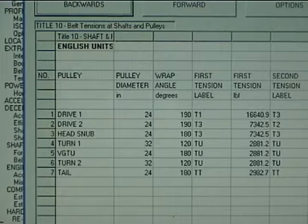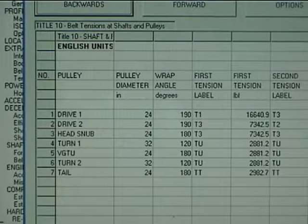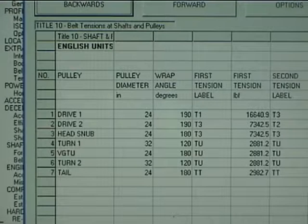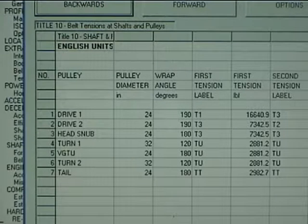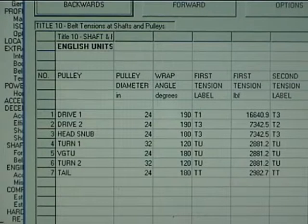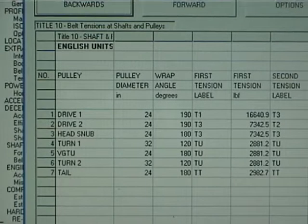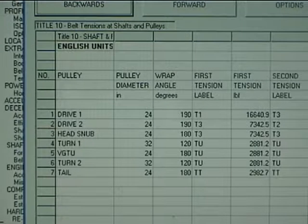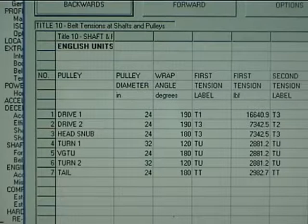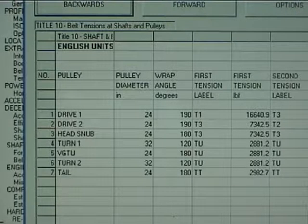Title 10 details tensions and angles of wrap acting at each pulley. These tensions, combined with angles of wrap, are useful to pulley manufacturers. Even though the need for engineered-class pulleys is signaled at Title 16.3, the precise information needed to provide pulleys meeting your requirements is given here.